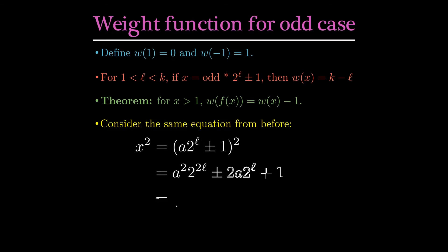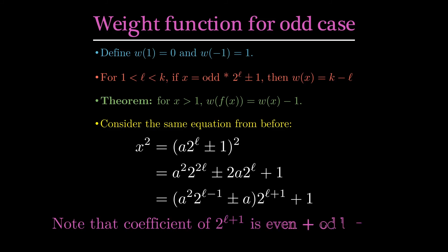Now, to see that this happens with the weight, let's assume that x is a times 2 to the l plus or minus 1, where a is odd. Doing some computations, we can see that x squared is an odd number times 2 to the l plus 1 plus 1. So if the weight of x is k minus l, the weight of f of x is k minus quantity l plus 1.